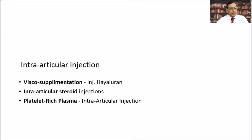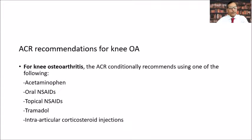Intra-articular injections include viscous supplementation with hyaluronic acid injection, intra-articular steroid injections, and platelet-rich plasma injections — all given intra-articularly. The ACR recommendation for knee OA is to start with acetaminophen, oral NSAIDs, topical NSAIDs, tramadol, and intra-articular corticosteroid injections.